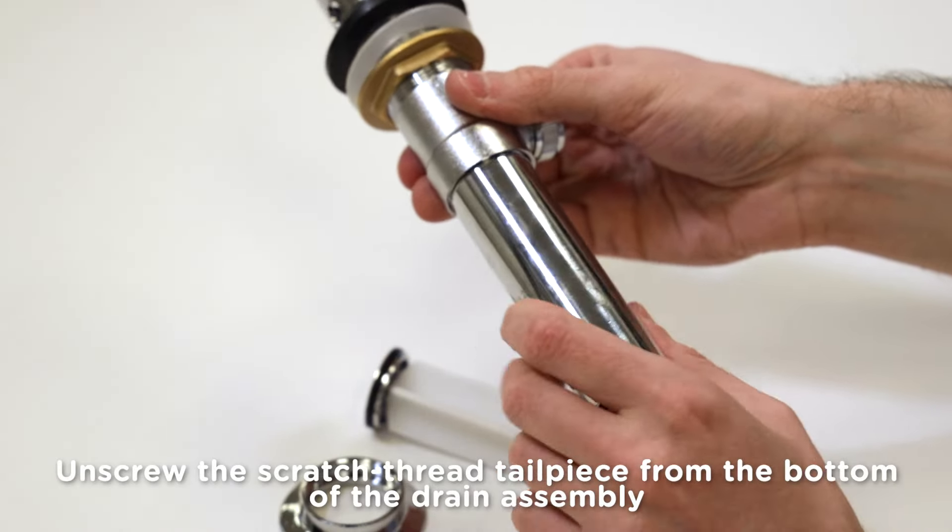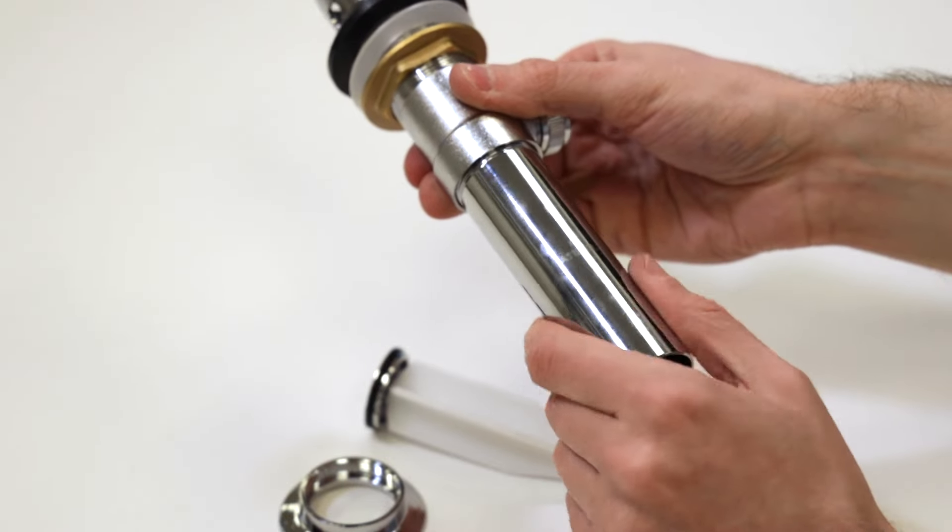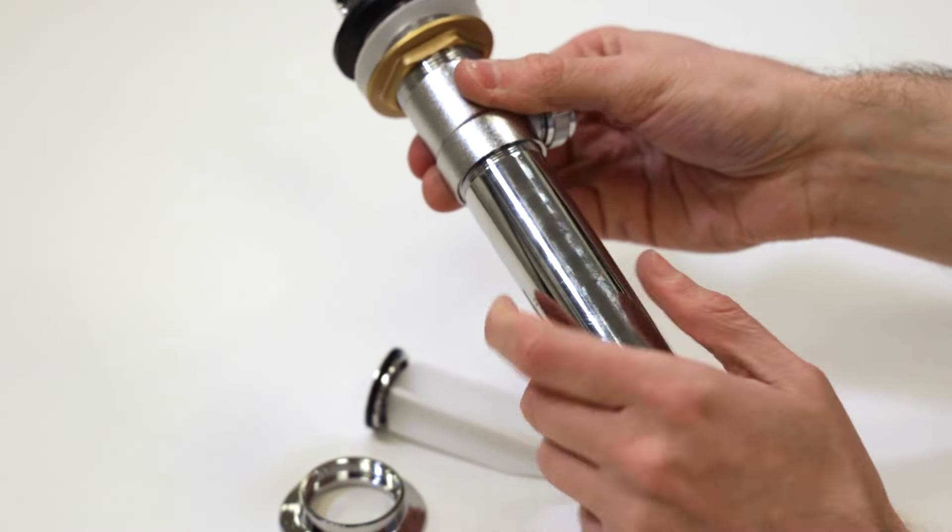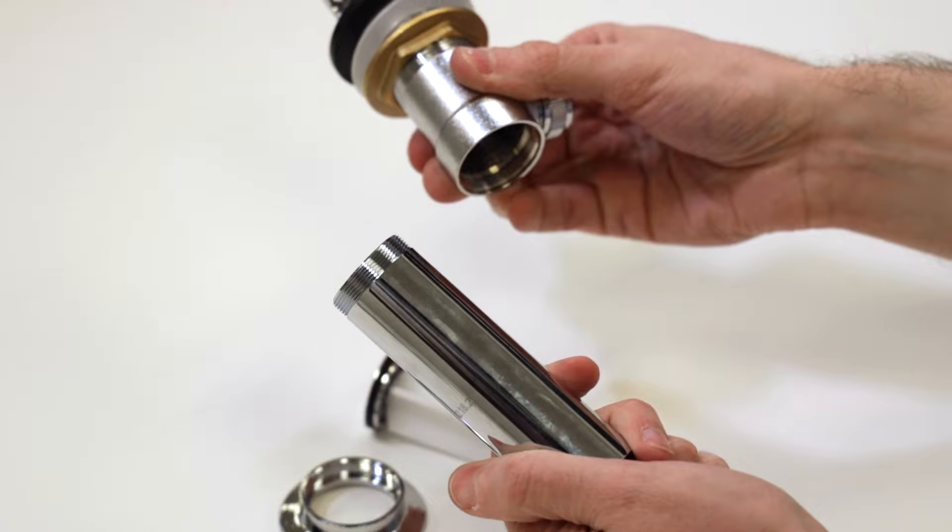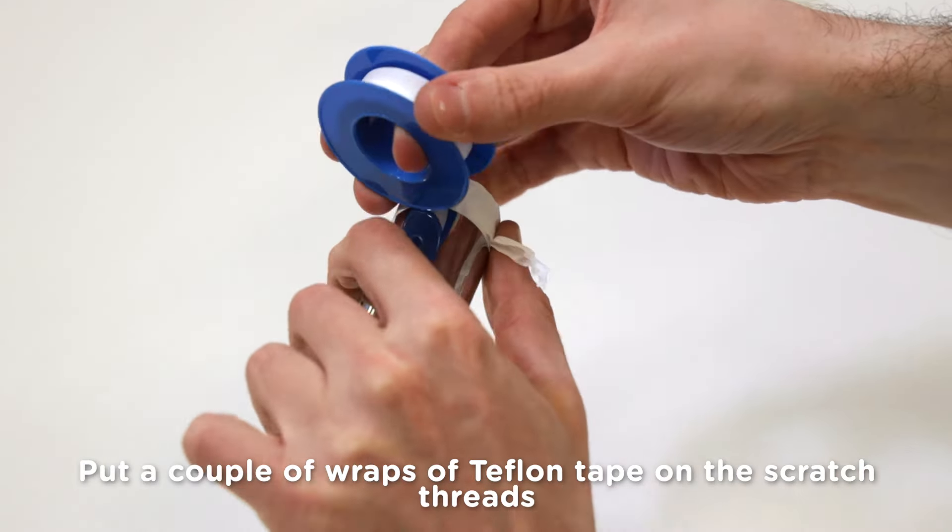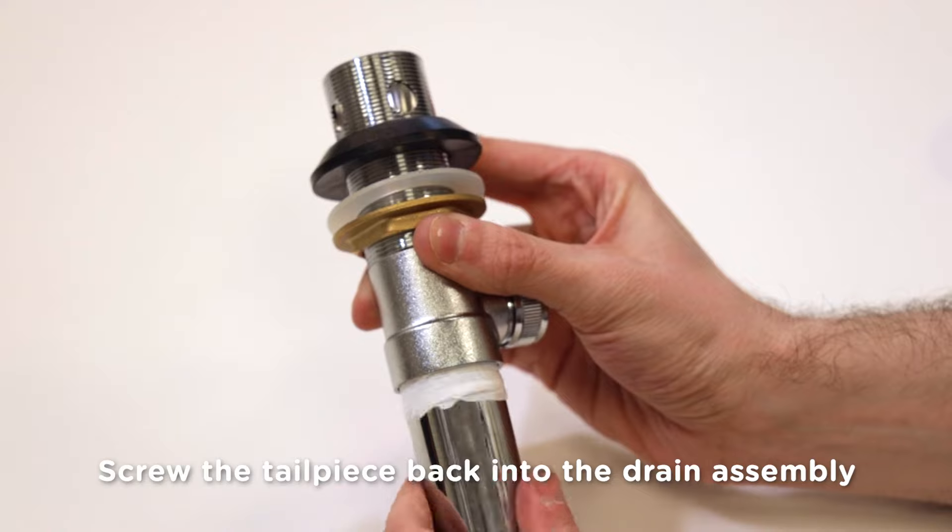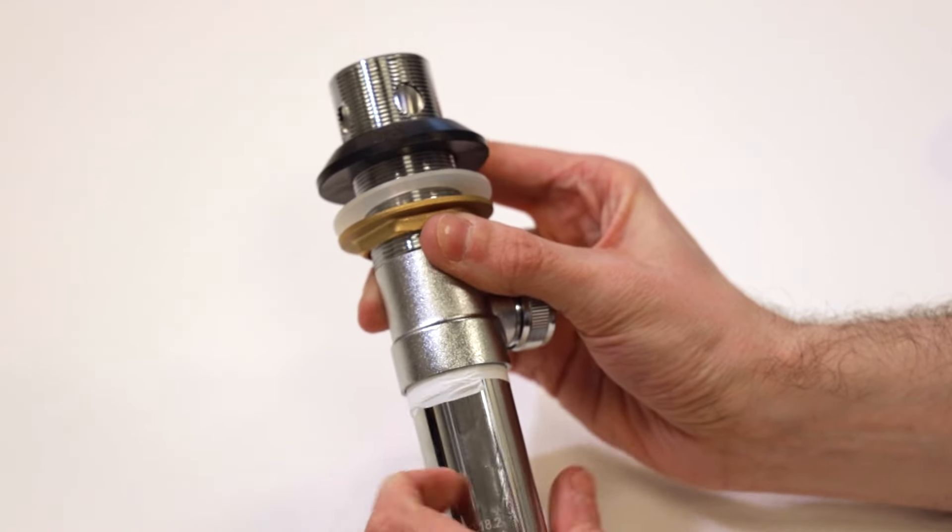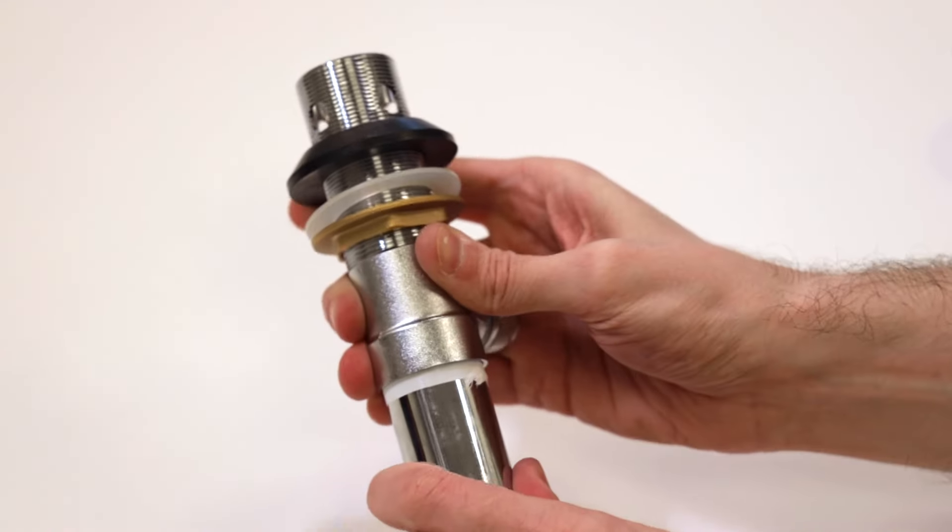Now, grab the drain assembly and unscrew the scratch thread tailpiece from the bottom. It may look like it's all one piece, but it really does unscrew. I promise. Put a couple of wraps of teflon tape on the scratch threads and screw it back into the drain assembly. Just as tight as you can get it with your bare hands is enough. Don't use pliers on it or you may damage it.